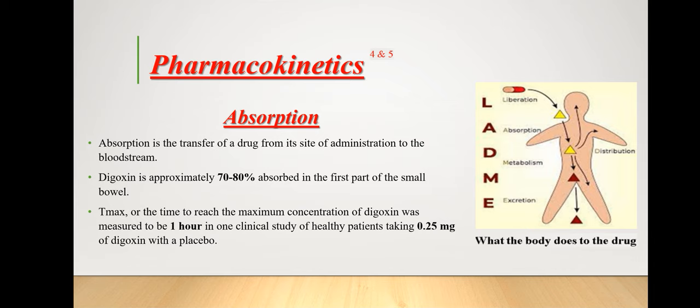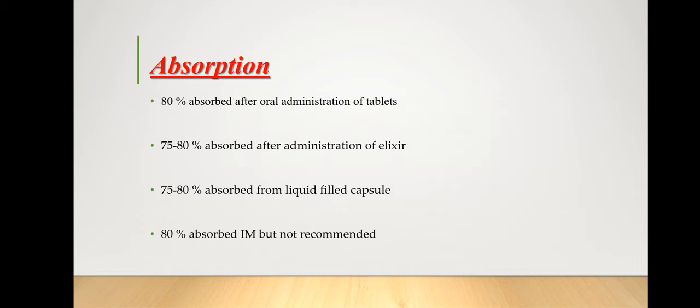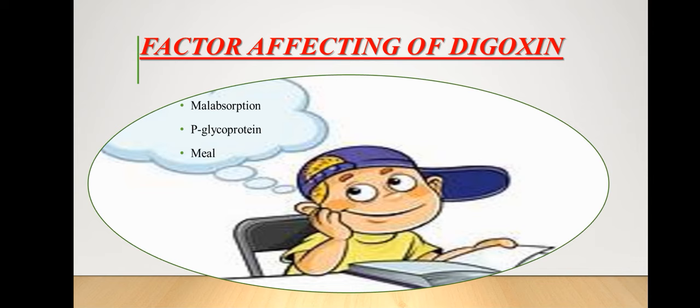Absorption of digoxin through different routes varies from 70 to 80 percent: 80 percent is absorbed from oral administration of tablets; 75 to 85 percent absorbed after administration of elixirs; 75 to 80 percent absorbed from liquid-filled capsules; and 80 percent absorbed intramuscularly, though IM is not recommended because the onset of action is very slow.